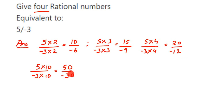So here we got 10 upon minus 6, 15 upon minus 9, 20 upon minus 12, and 50 upon minus 30 as four equivalent rational numbers. Your answer may not match mine or your teacher's — that is because we can find infinitely many equivalent rational numbers for any given number, since we can multiply by any number, positive or negative.